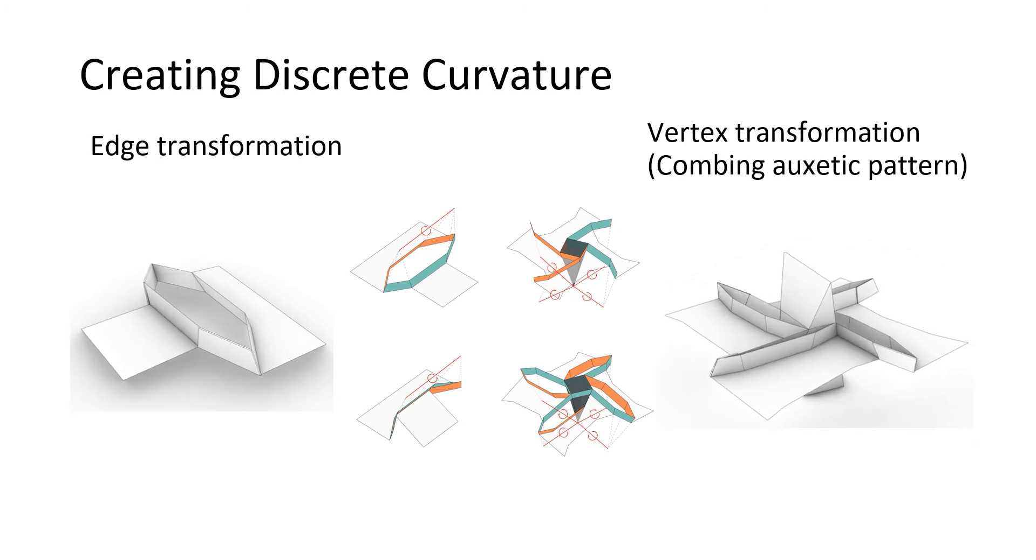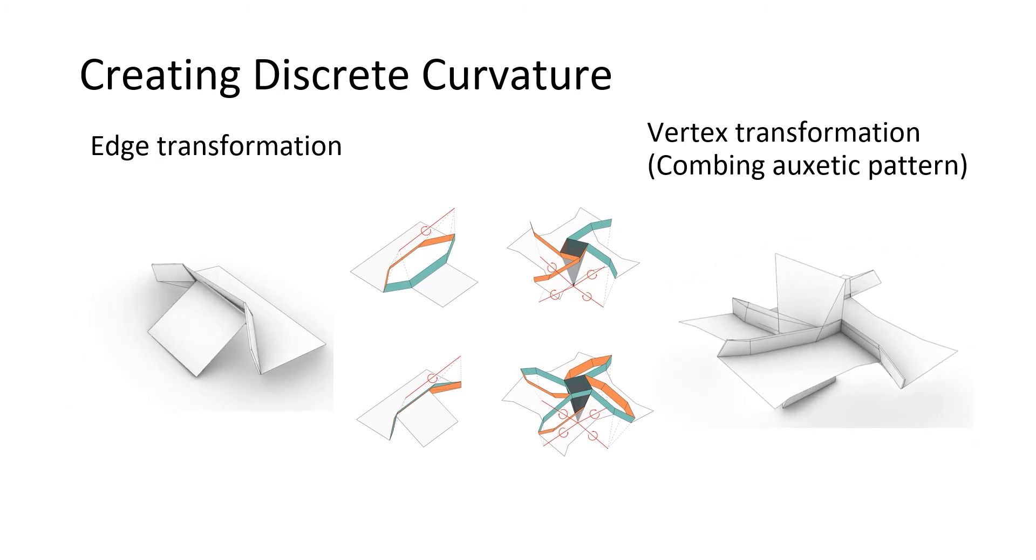When the vertex has negative Gaussian curvature, the scenario is more complex. We do not discuss this in the presentation, but refer you to the paper for more details.